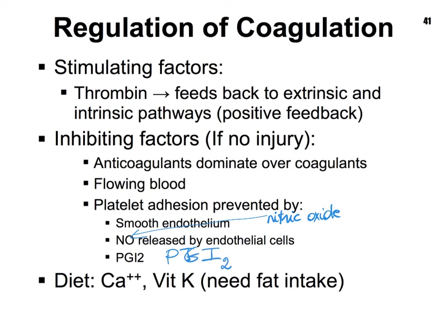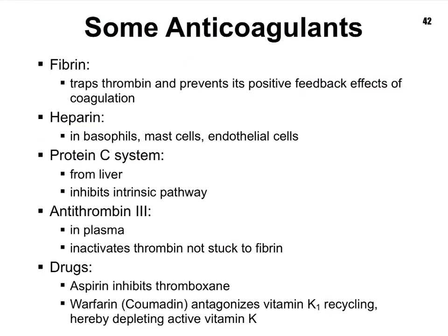Our diet needs to contain calcium as well as vitamin K. Vitamin K, if we ingest it with our food, requires access to fats — because without fats, vitamin K cannot be absorbed in our intestines. Anticoagulants are present in our blood in higher amounts than coagulants. Let's list a few of the more important anticoagulants to be aware of, noting there are many more.